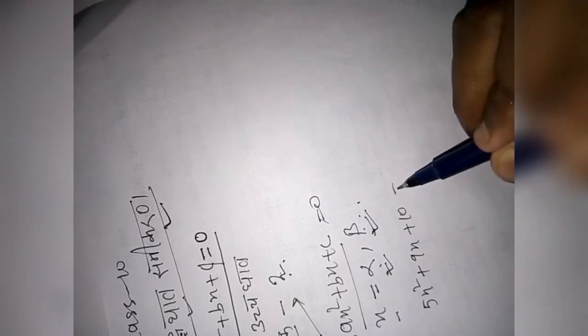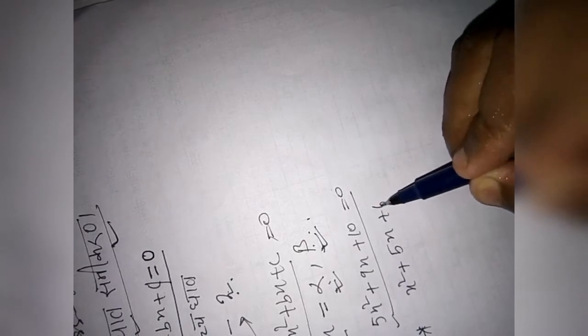The quadratic equation has some basic fundamentals. I will take an example: 5x square plus 9x plus 10 equals zero. Now we will factor this. If we factor, we will take 5x square plus 5x in this bracket, then we will get it equal to 0.